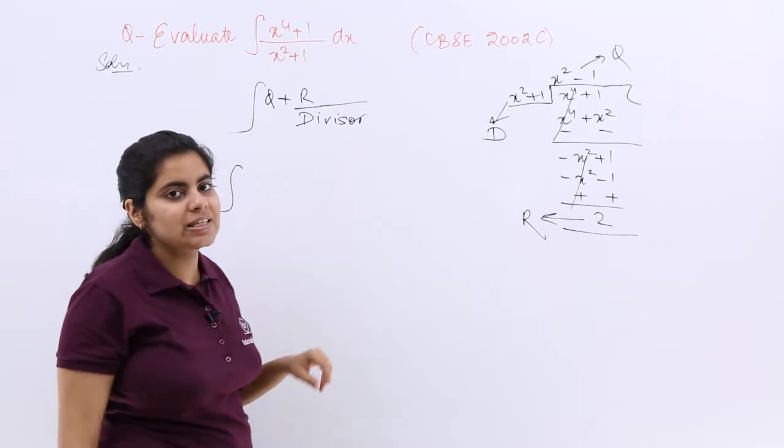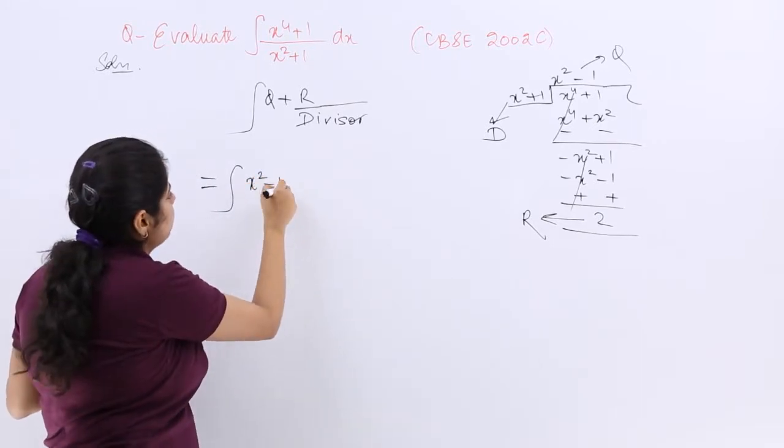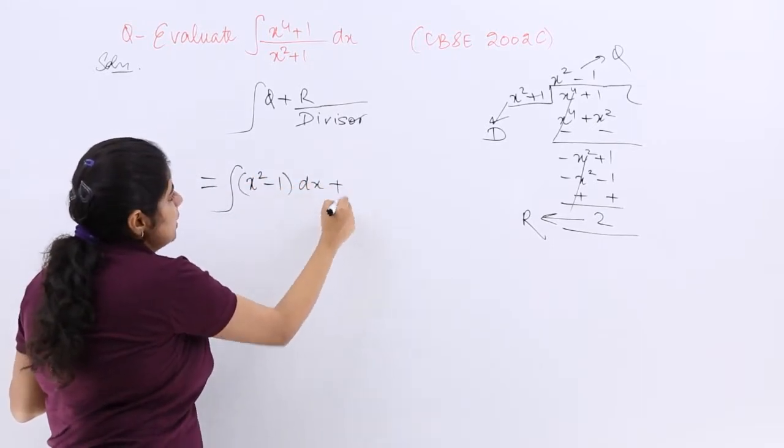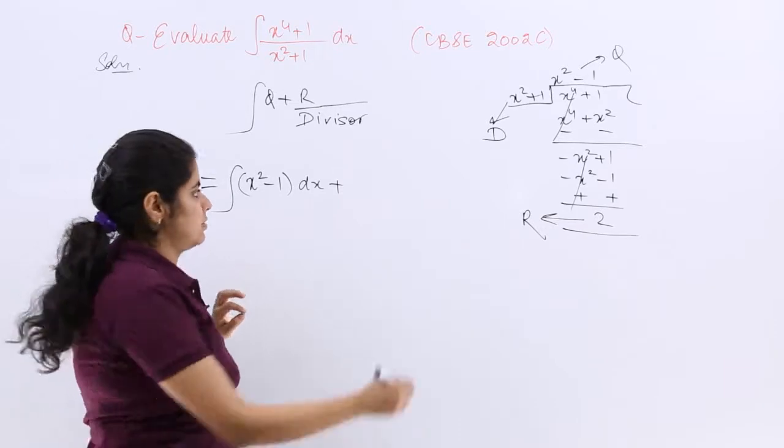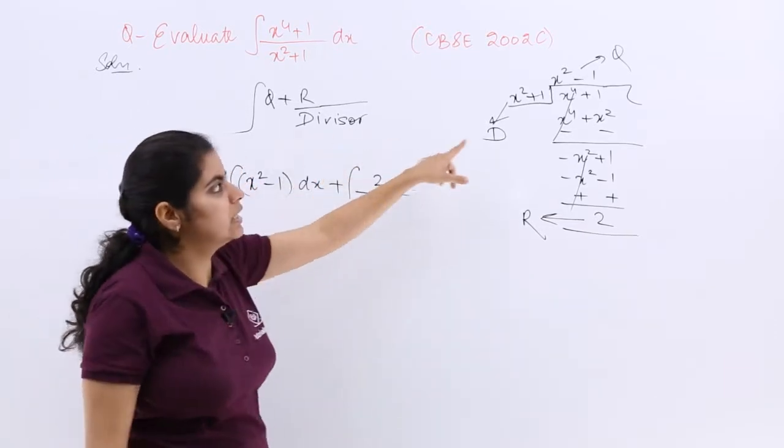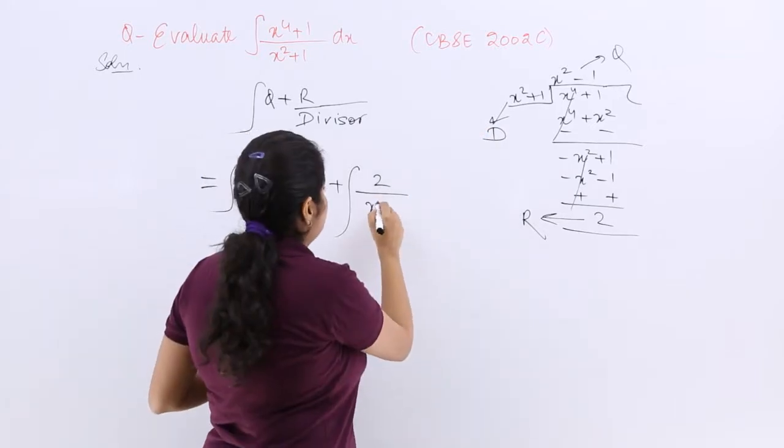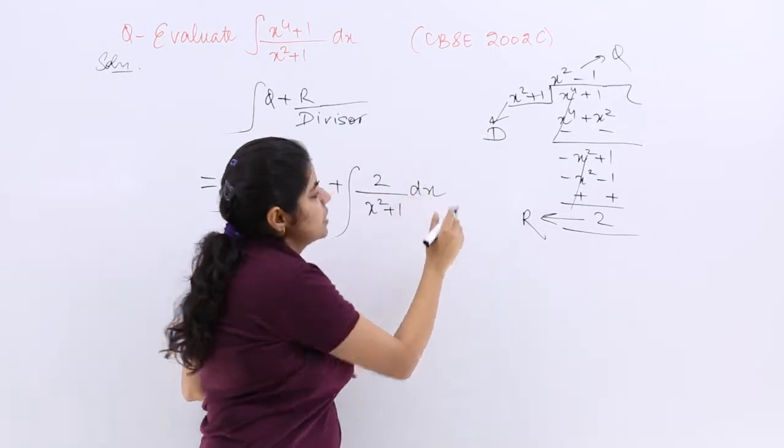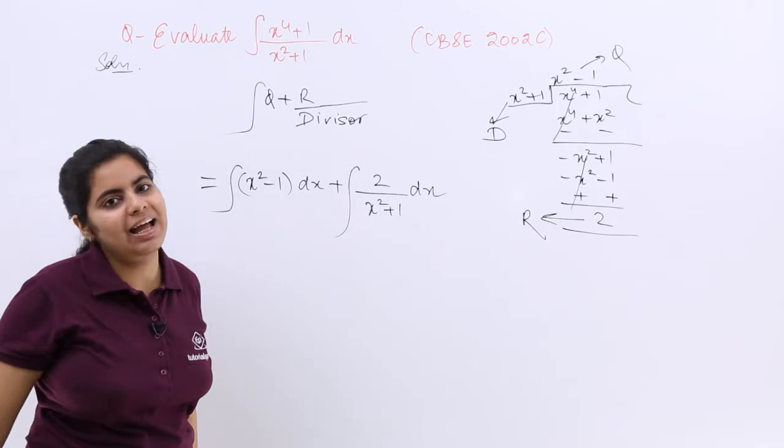Integration Q. Q is x squared minus 1. Obviously with respect to x. Plus R. R is remainder upon divisor. Divisor is x squared plus 1. And again with respect to x. Now just integrate and get the answer.